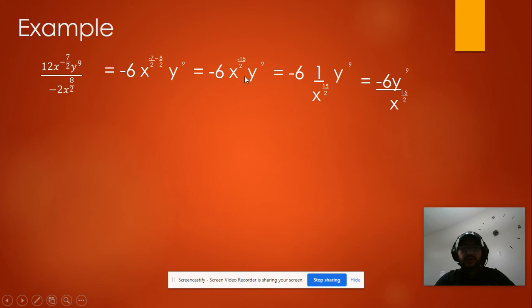First do the quotient rule, so subtract the exponents. Then if you get a negative you need to send it to the denominator.